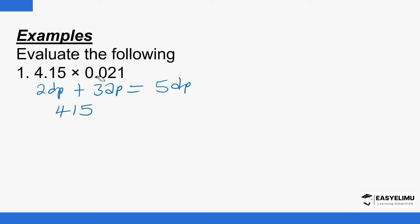Disregarding the decimal point here, the number is 0021, which is just 21. So you are multiplying 415 by 21. Each of the digits down here are multiplied by all the digits up there: 1 will be multiplied by 415, and 2 will also be multiplied by 415. Starting with 1: 1 by 5 is 5, 1 by 1 is 1, and 1 by 4 is 4. When it comes to 2, I multiply by the total value of 2.